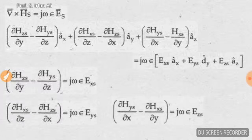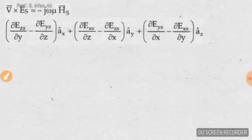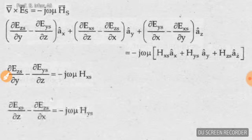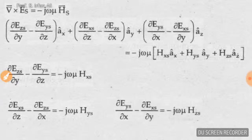Now we go to Maxwell's second equation in phasor form. The left-hand side is expanded similarly to the first equation, and the right-hand side is also expanded. Equating both sides and extracting the x, y, and z components gives three more equations — so we now have six equations total: three from Maxwell's first equation and three from Maxwell's second equation.